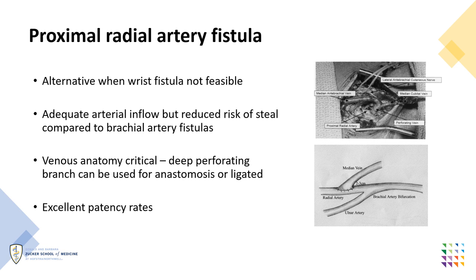Also, try to minimize the use of the brachial artery as inflow. Create radiocephalic fistulas in the distal forearm when feasible, or use the proximal radial artery for inflow instead of the brachial artery when creating upper arm fistulas. This allows for adequate inflow while reducing the risk of steal. The deep perforating branch can also be used for anastomosis in this location or should be ligated.